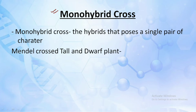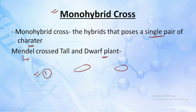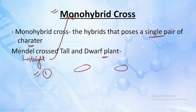Monohybrid cross are crosses that possess a single pair of characters — the cross in which we are taking into consideration only one character at a time. Mendel crossed the tall and the dwarf plant, taking the single character of height for understanding the monohybrid cross.